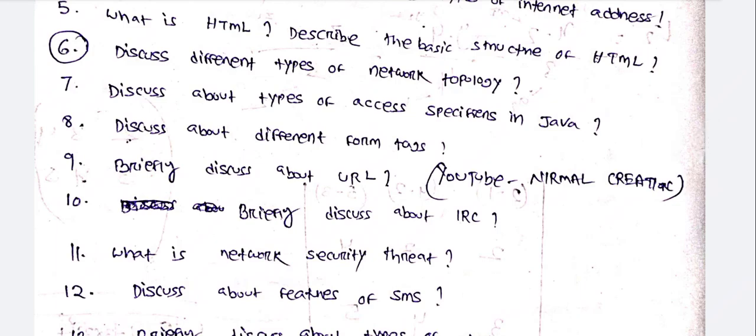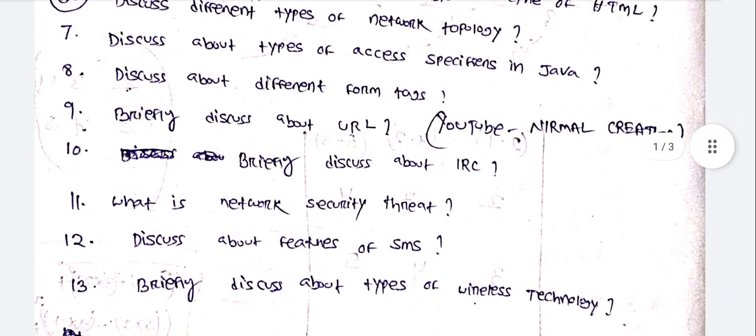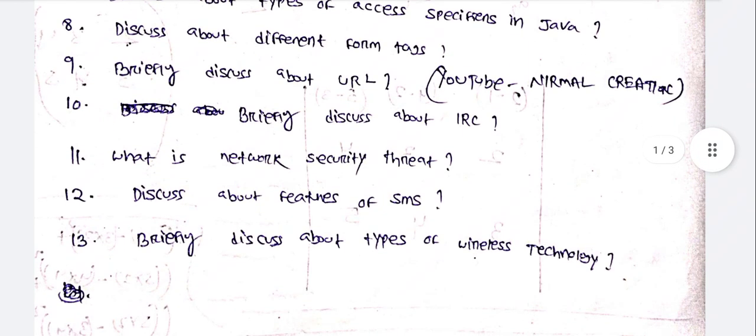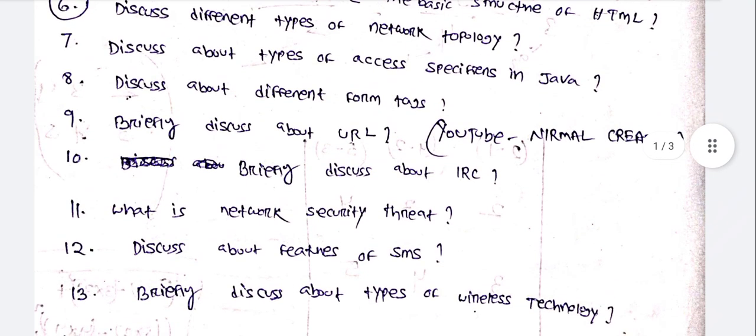Important question: Discuss about types of access specifiers in Java. Discuss different form tags. Briefly discuss about URL.